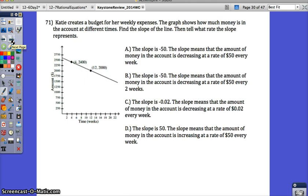Number 71, Katie creates a budget for her weekly expenses. The graph shows how much money is in the account at different times. Find the slope of the line. Remember that slope is your rate of change. So find how much she's changing. You can also count the rise over the run. So use the slope formula or count rise over run. I can see what kind of slope this has. The line is trending downward. So I'm going to end up with a negative slope. Which, with money, that means it's decreasing or I'm spending more money than I'm making.